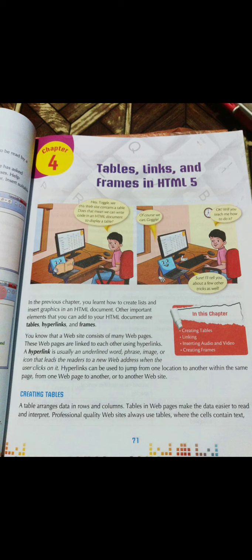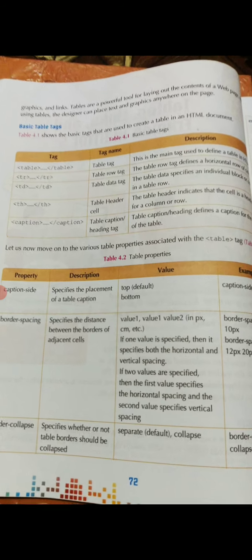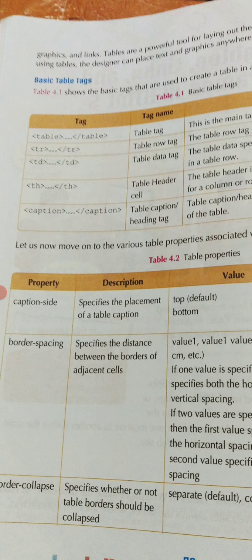To recap: a hyperlink is usually an underlined word, phrase, image or icon that leads the reader to a new web address when the user clicks on it — meaning we can move from one web page to another very easily. We have also covered how to create a table using the five basic table tags.